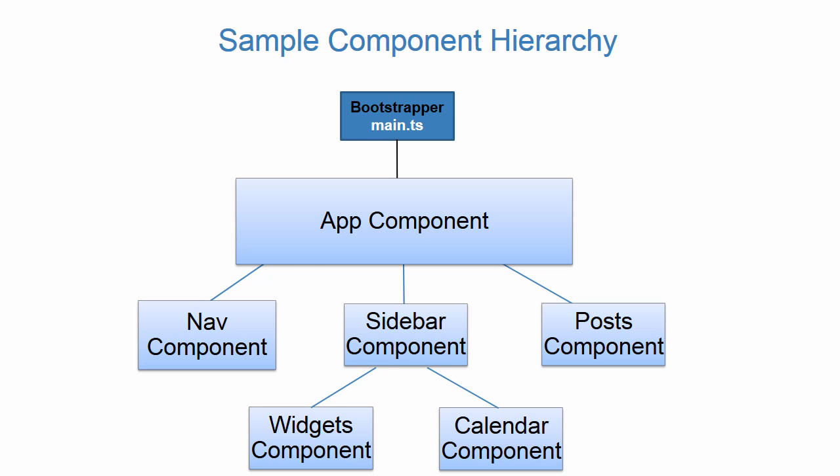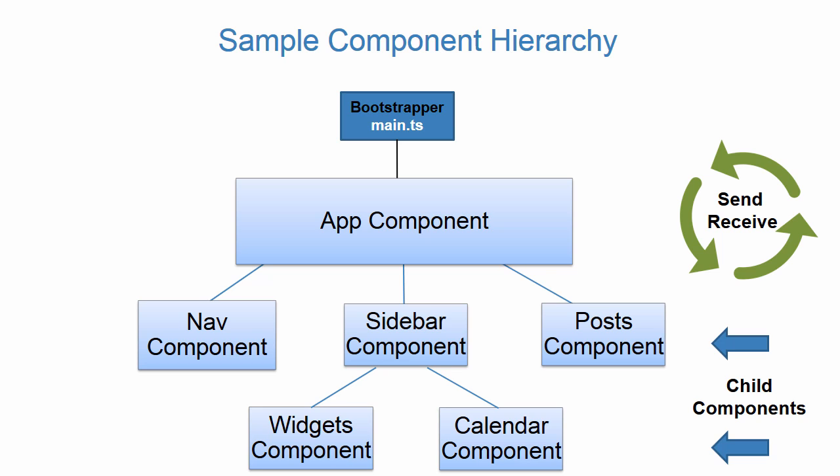Components, as we've learned, are at the heart of Angular. When composing our application, our components form a tree-like structure in which these components become nested. These nested or child components need a way of receiving data from its parent as well as sending data back to its parent. In order to accomplish this, Angular provides us with inputs and outputs. Let's first focus on inputs.